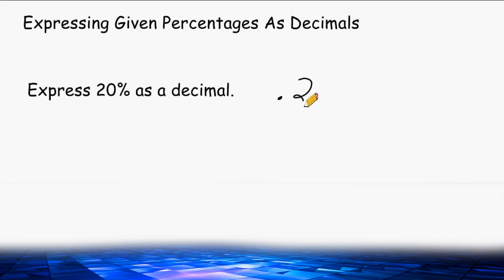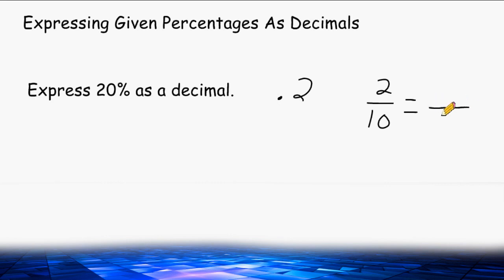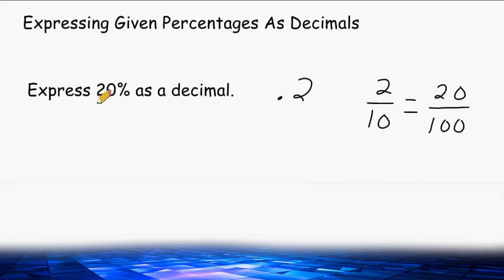The 2 is in the tenths place, so this is read as two tenths. But a percentage is out of 100, so if we change the denominator from 10 to 100, we make the numerator 10 times bigger, giving us 20. So 2 out of 10 is equivalent to 20 out of 100, which is the percentage 20%.